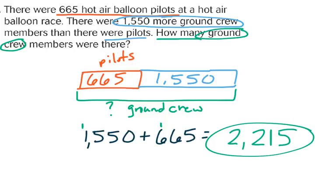That's our lesson for today. What's really important is that we're reading our problems carefully and setting up our models. We need to identify: is this an addition problem or a subtraction problem? Our models help us do that by identifying whether we're looking at two parts trying to find our whole, or if we have a part and a whole with a missing part. When we have a part, a whole, and a missing part, we subtract. When we have two parts and a missing whole, we add. See you tomorrow.